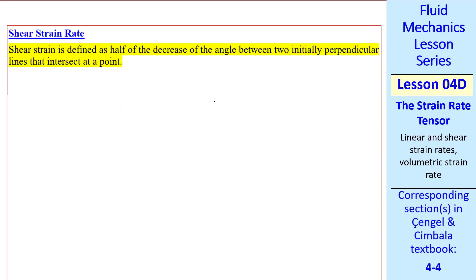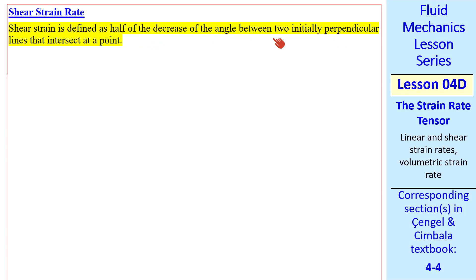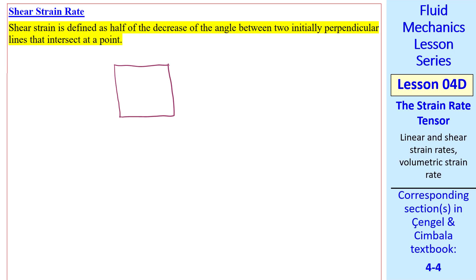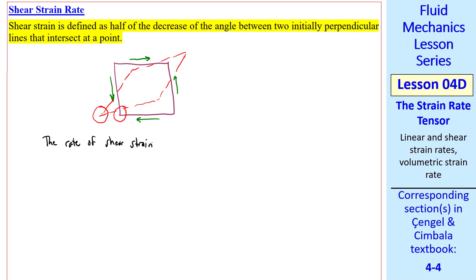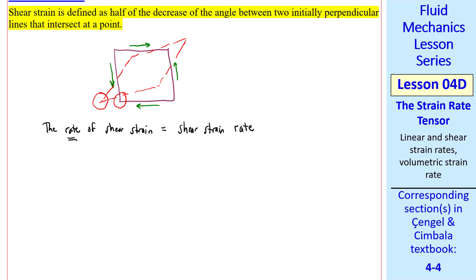Now let's talk about shear strain rate. Shear strain is defined as half of the decrease of the angle between two initially perpendicular lines that intersect at a point. If this is our initial fluid element, and shear stresses act on the faces of this element, it will distort. We can do a Taylor series analysis to figure out what half of the decrease of the angle is — see the textbook for details. We're interested in the rate. It turns out there are six components, using notation ε_xy, where xy indicates two initially perpendicular lines along the x and y axes.